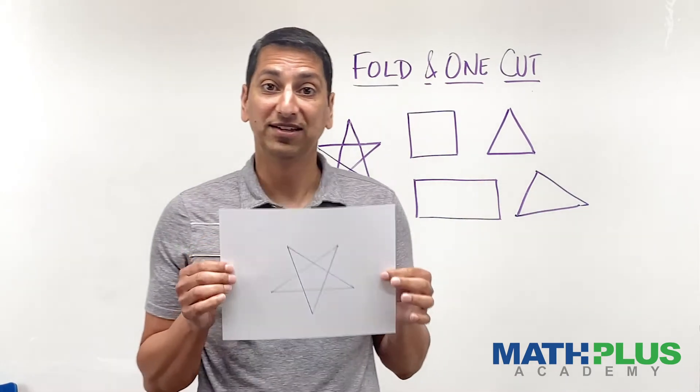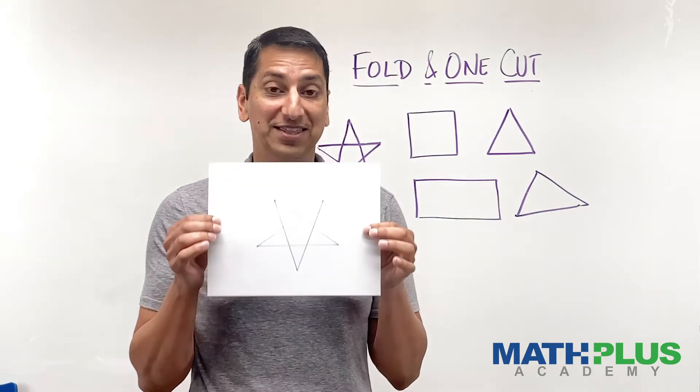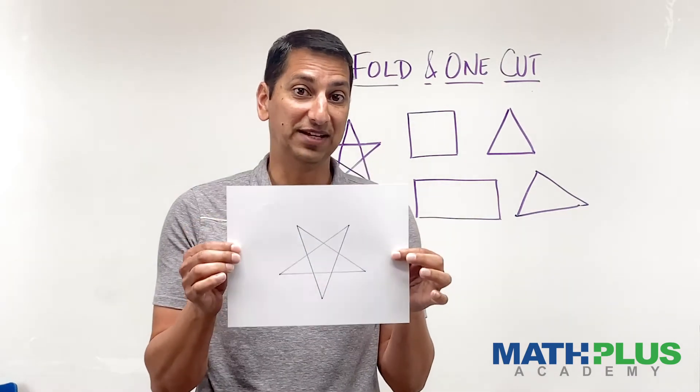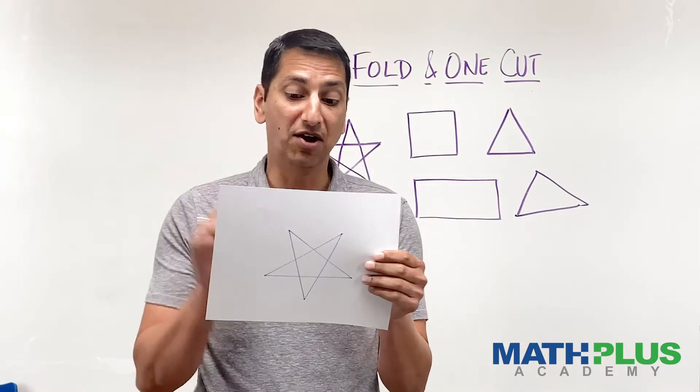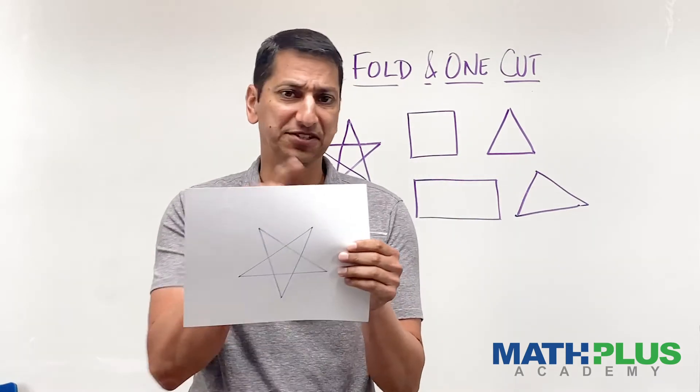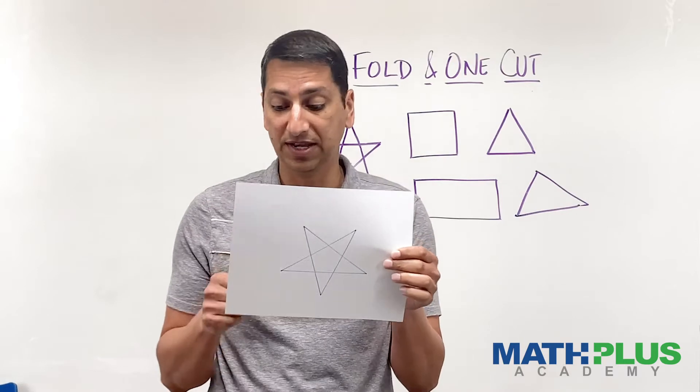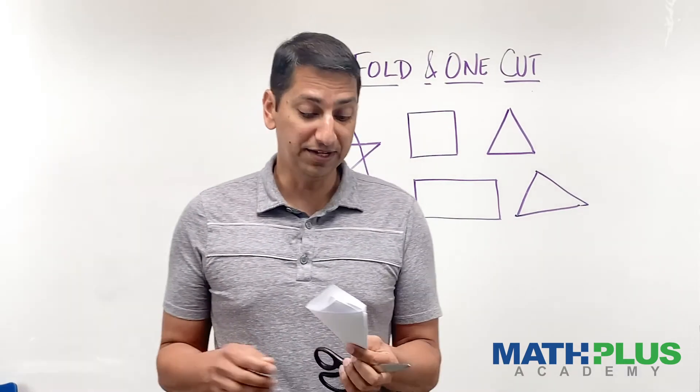Or you can try the five-point star. Can you cut this out with one straight cut? And keep in mind in all these cases we're never using the edge of the paper to help us. The shape is completely in the center and we want to cut it out.